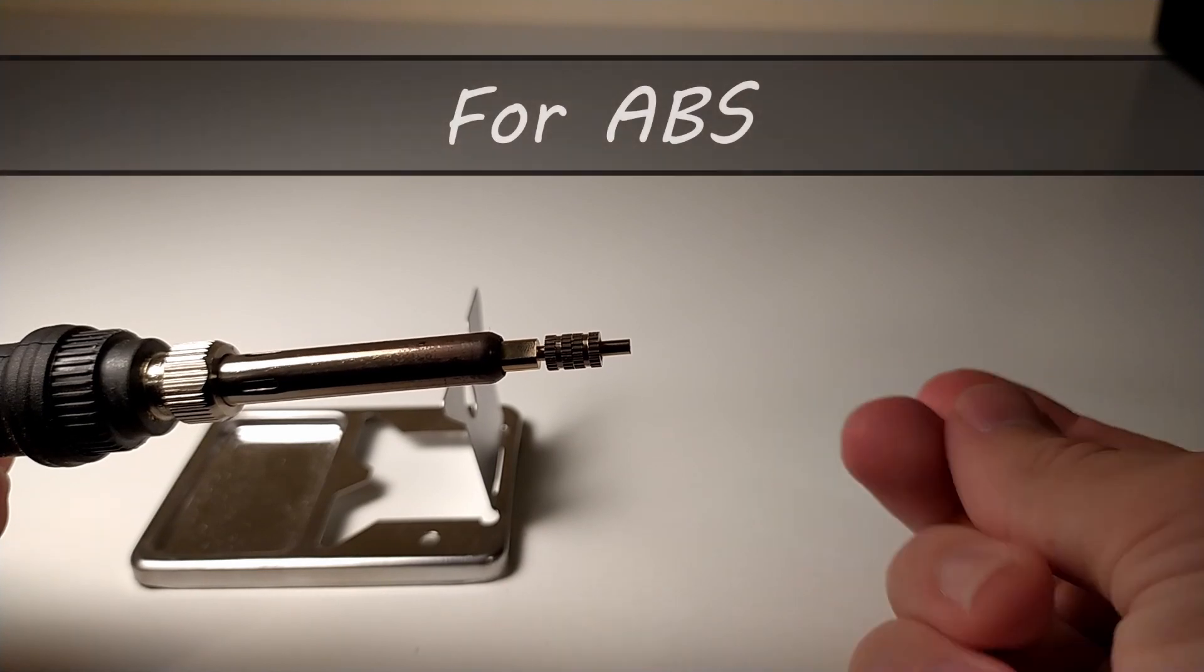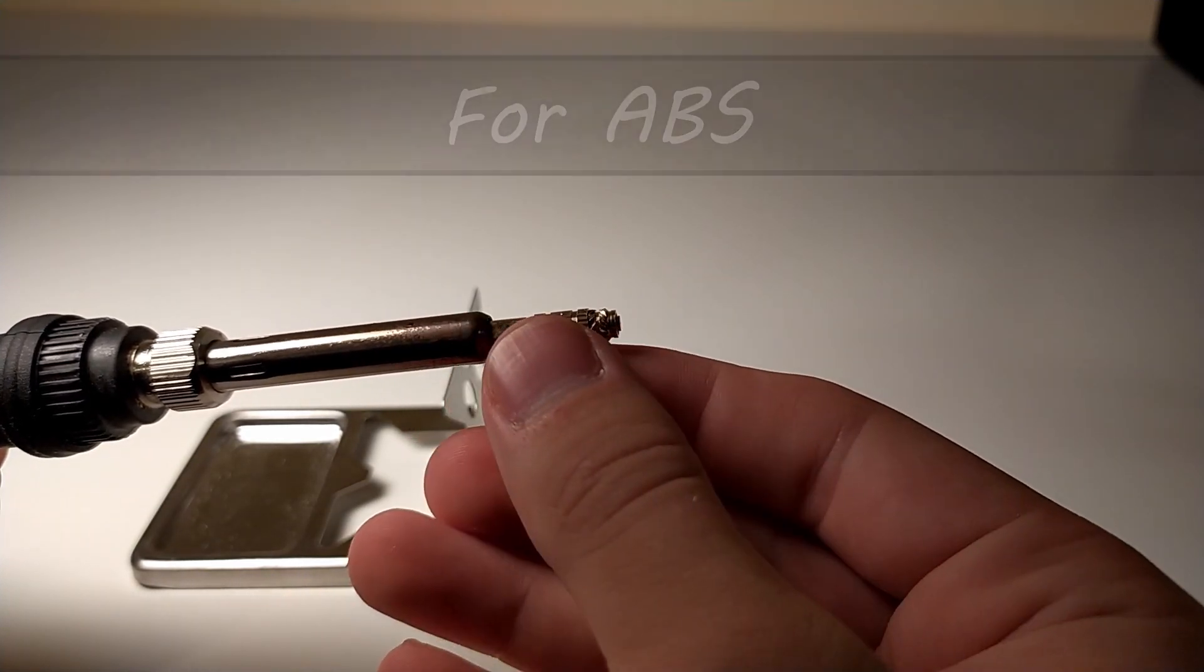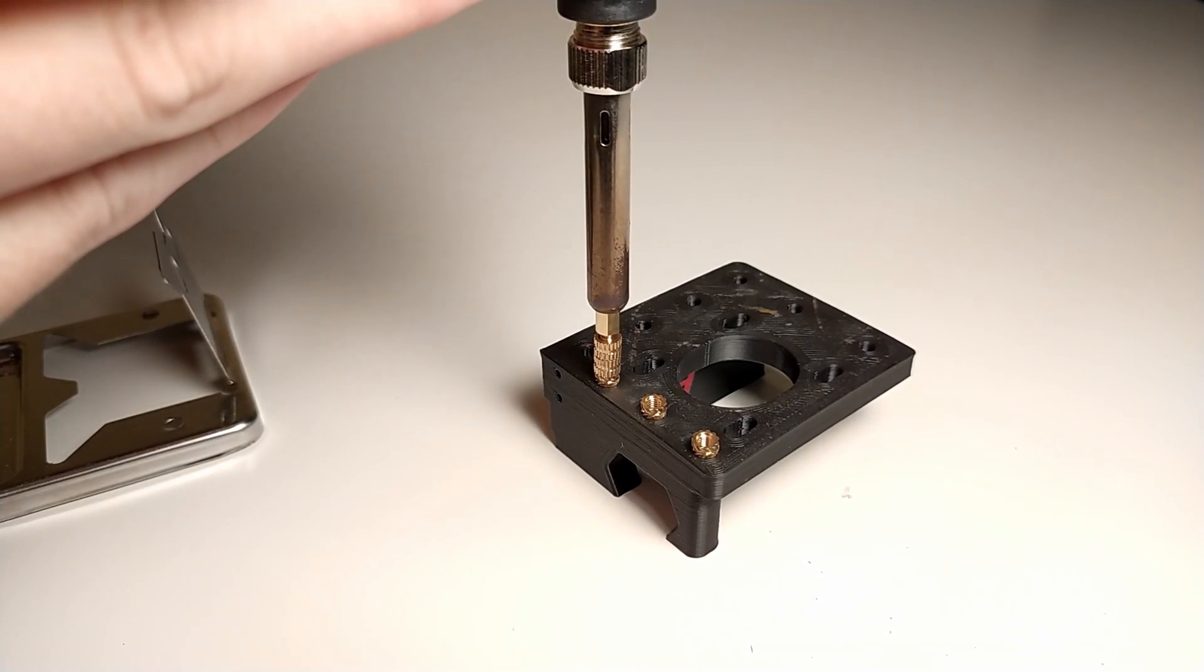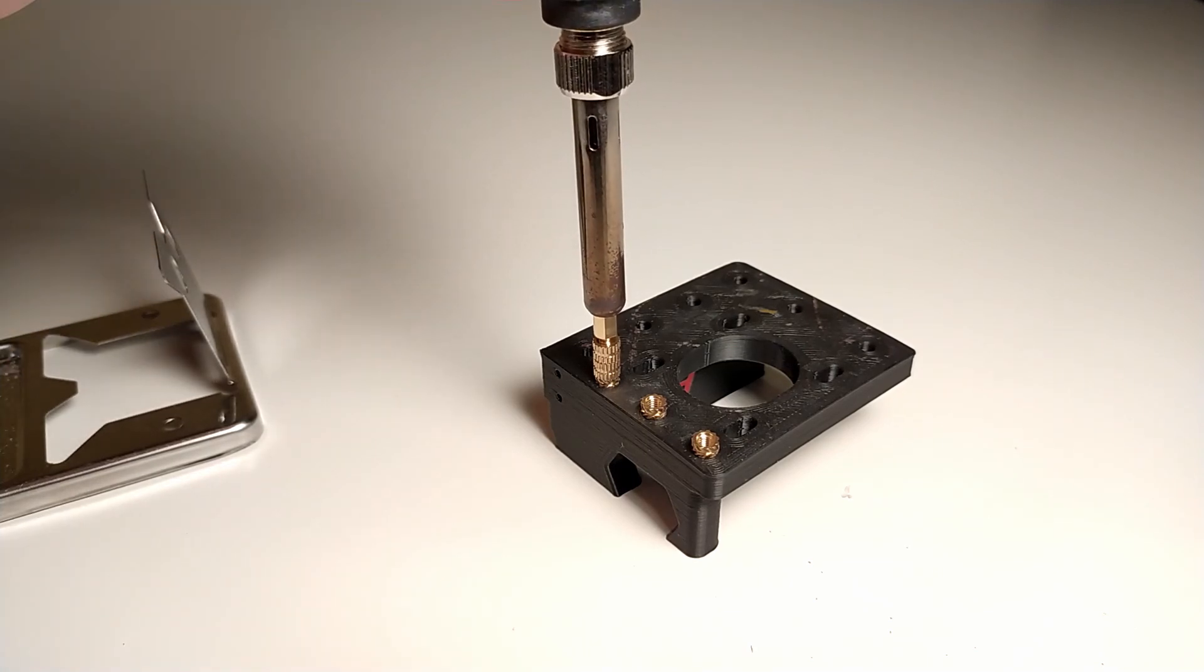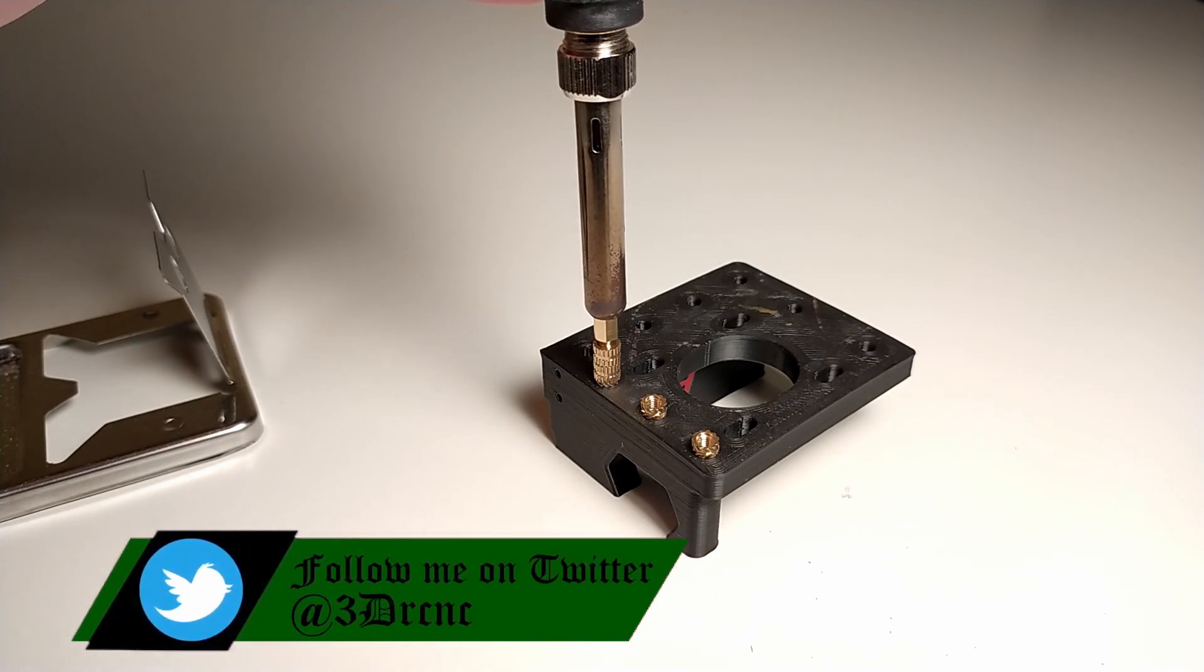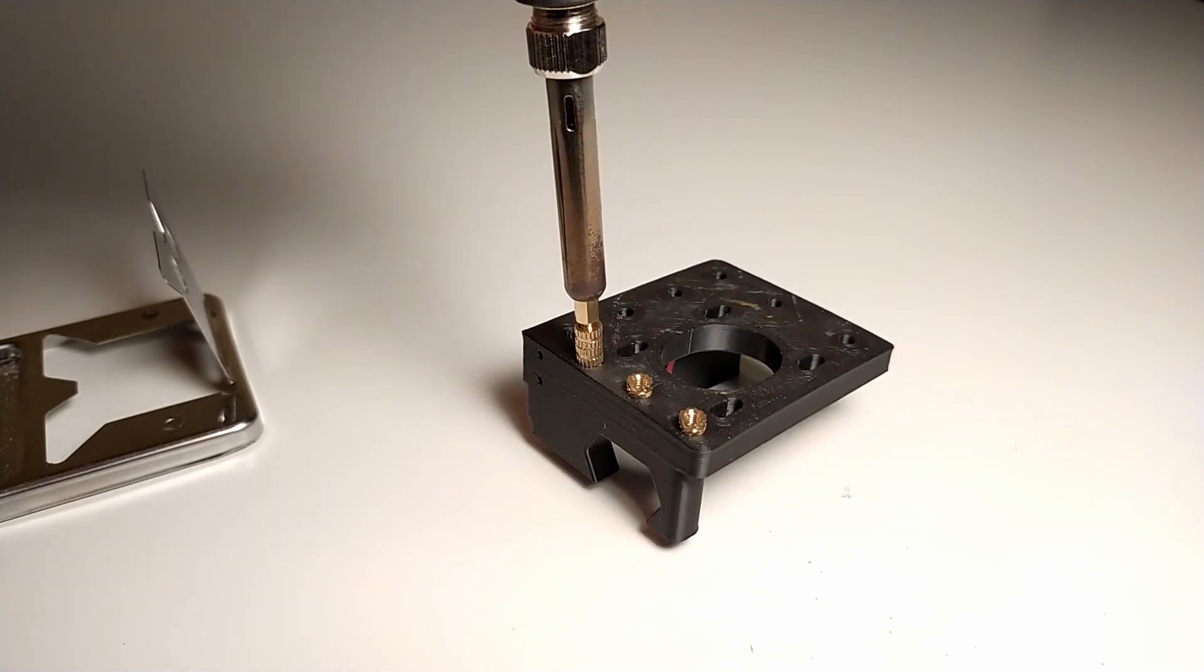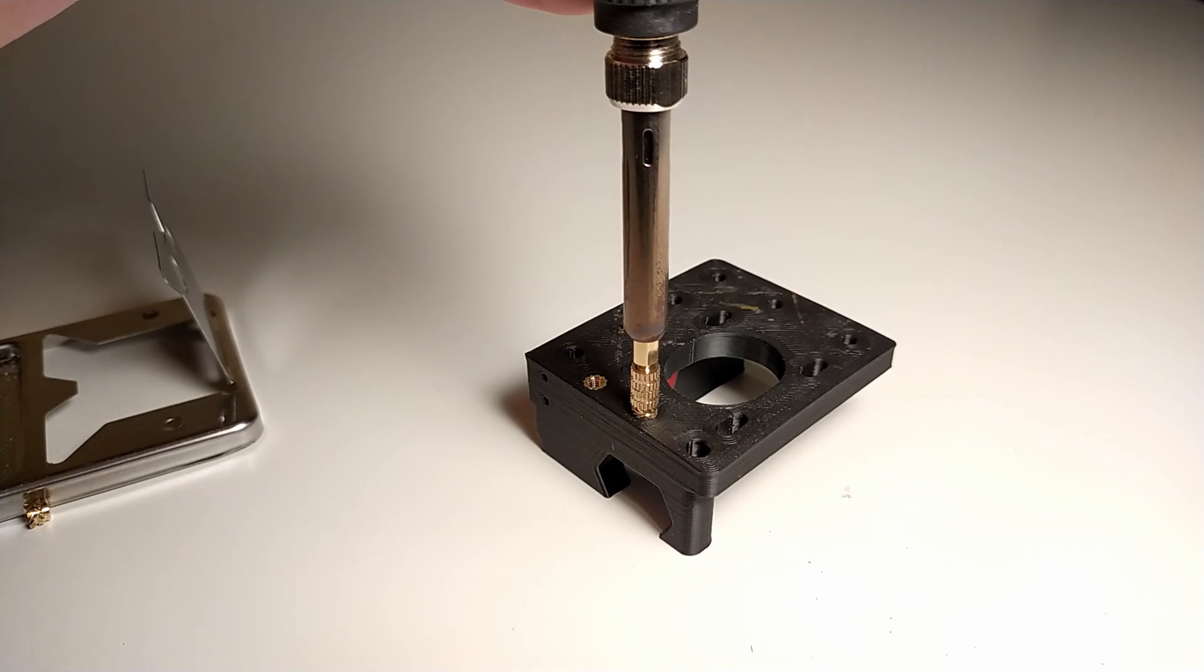For the actual installation of the insert, I use 300 degrees on my soldering iron. You need to hold it steadily straight with slight pressure downwards. You don't want to force it in, you want it to melt in so you get a nice grip around the outside teeth of the insert. Once you push it in, just remove the soldering iron and let it cool off, and then you have a really nice threaded insert in your printed part.